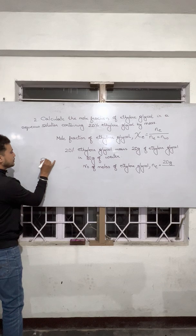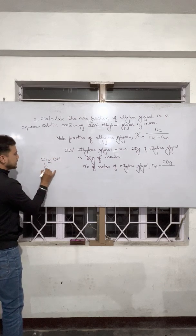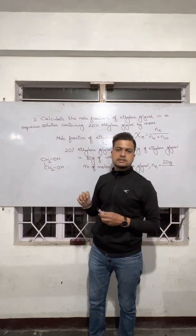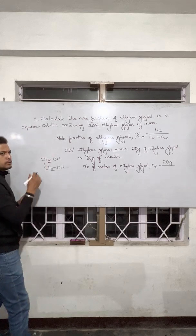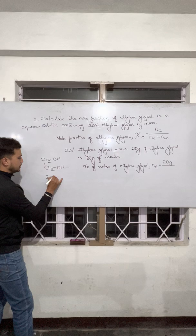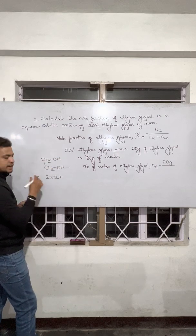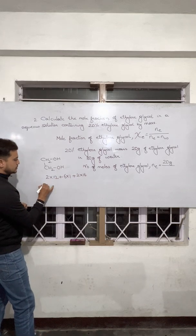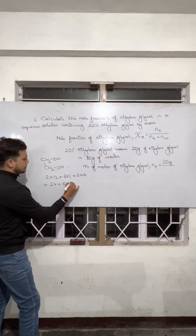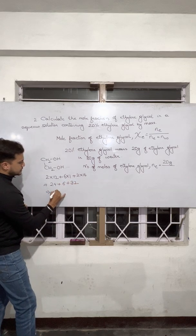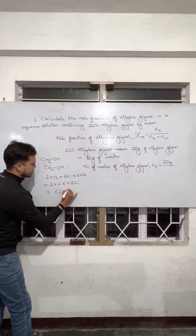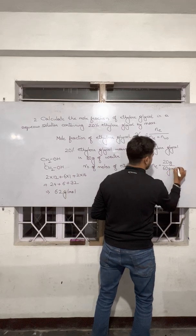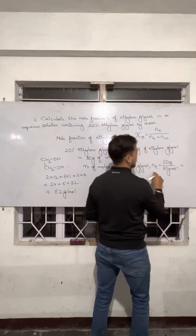Ethylene glycol is nothing but CH₂OH–CH₂OH. The IUPAC name of ethylene glycol is ethane-1,2-diol. To find the molecular mass: there are 2 carbons, so 2 × 12; a total of 6 hydrogens, so 6 × 1; and a total of 2 oxygens, so 2 × 16. That gives us 24 + 6 + 32 = 62 grams per mole. Once we know that, we can substitute 62 g/mol to get the required number of moles.